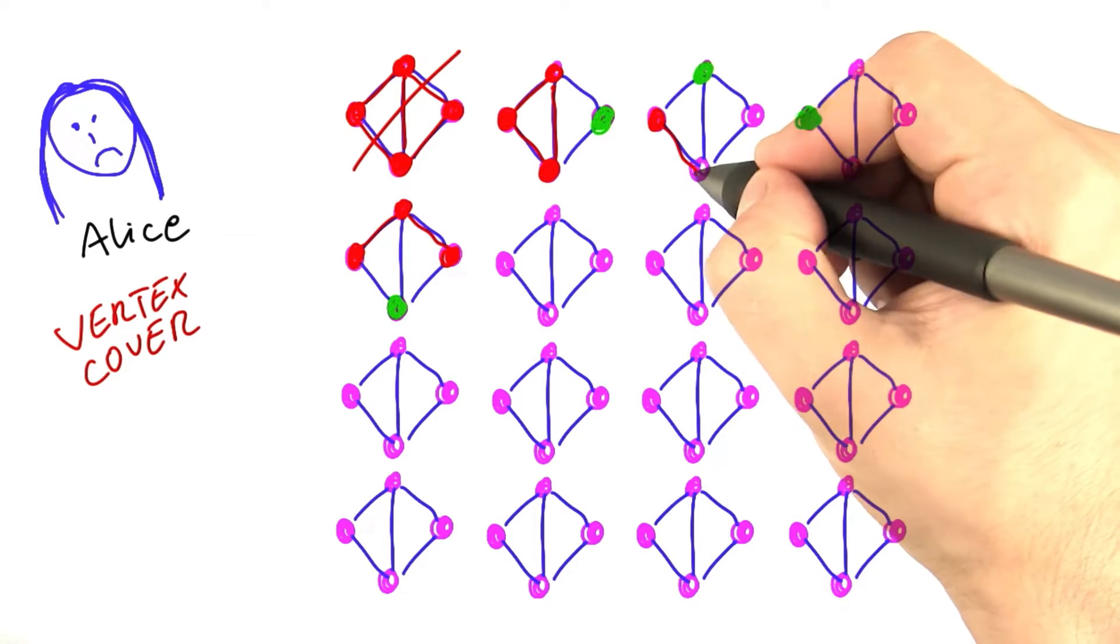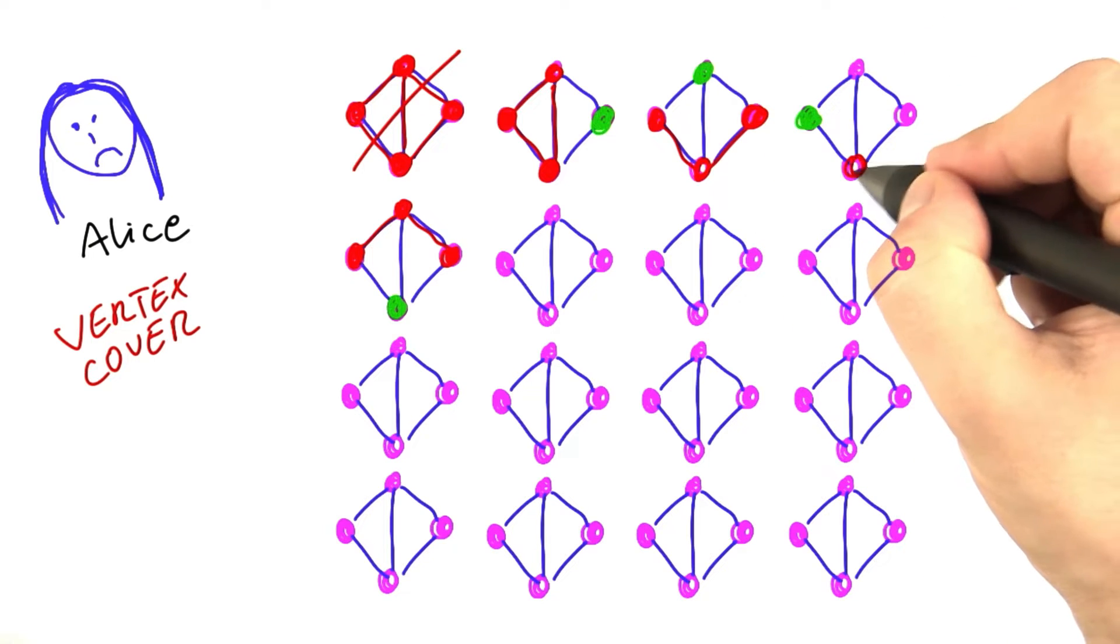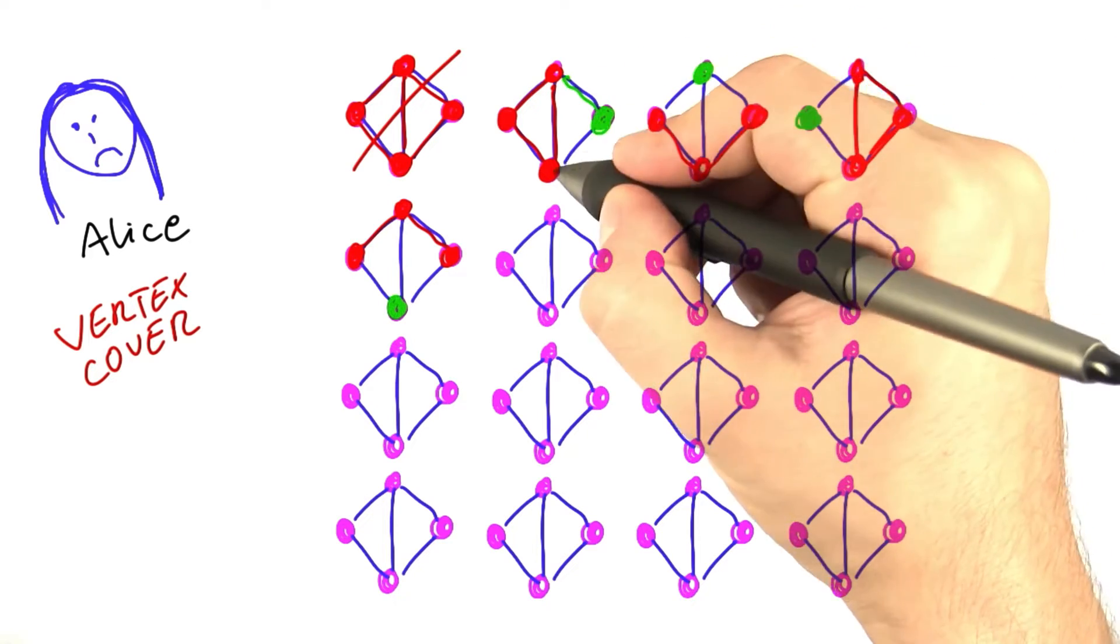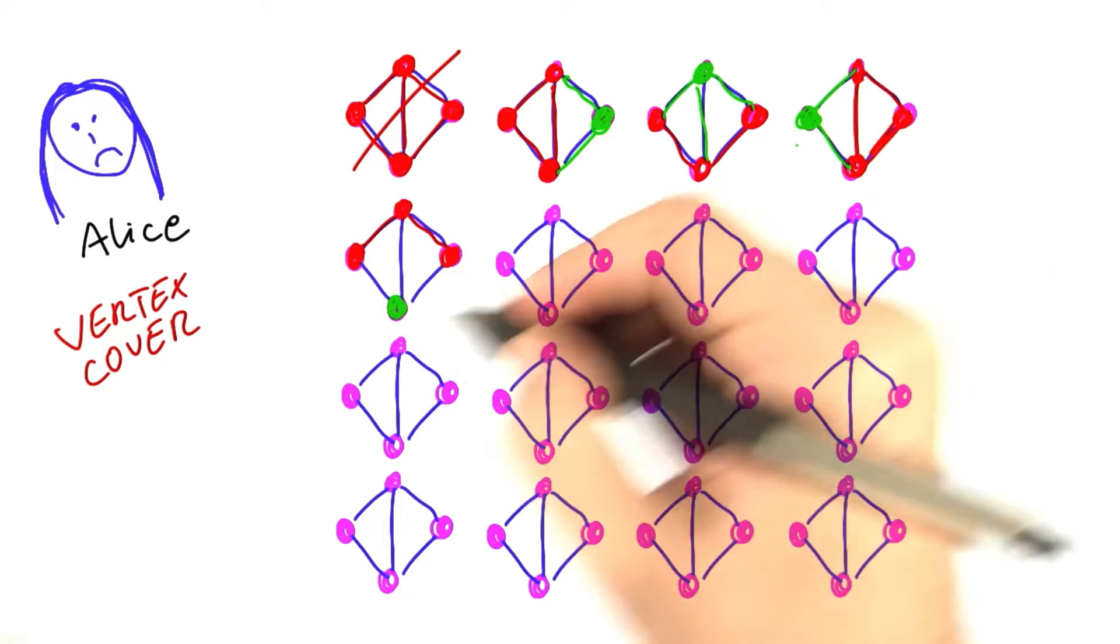Then it would maybe start out by saying, let's put one vertex into the VertexCover. There's actually four different ways of doing this. And at least this time we have some edges covered, but still none of these solutions is a valid solution because we still have uncovered edges. And I've drawn them in red here, so you can better see them.